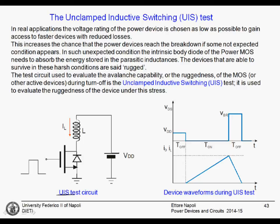What happens when the device enters the breakdown condition? A weak or old device will be destroyed immediately. A modern, rugged device will resist the breakdown voltage for a given amount of time and for a given power.